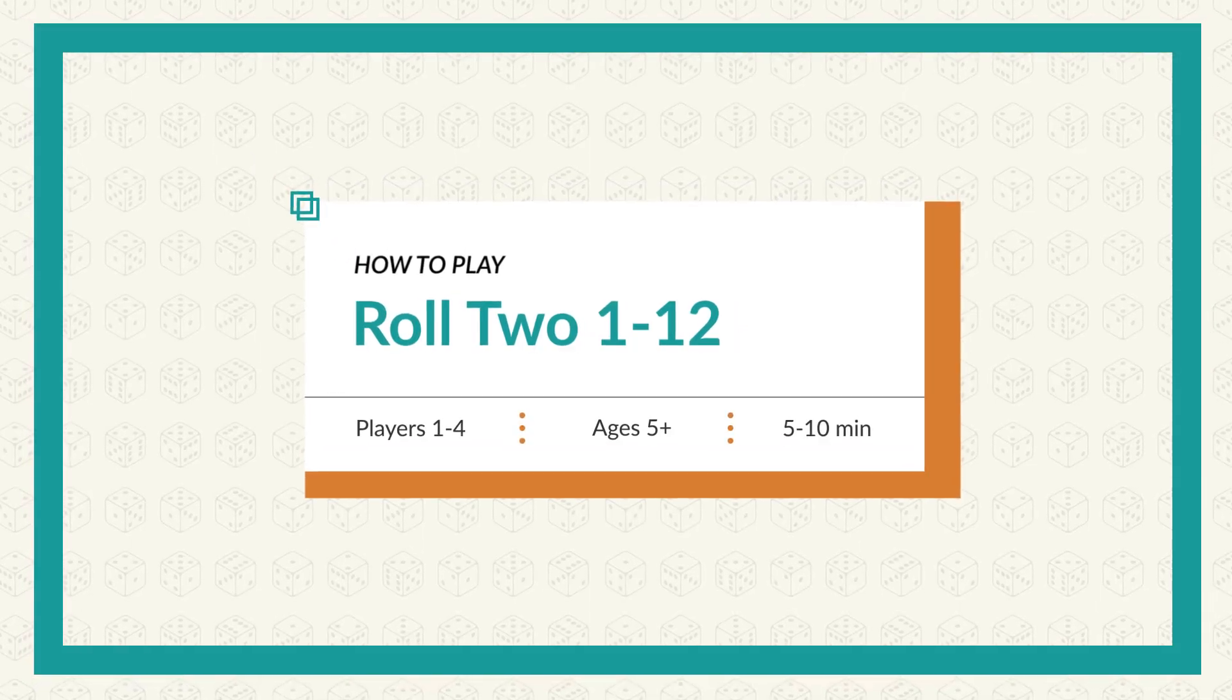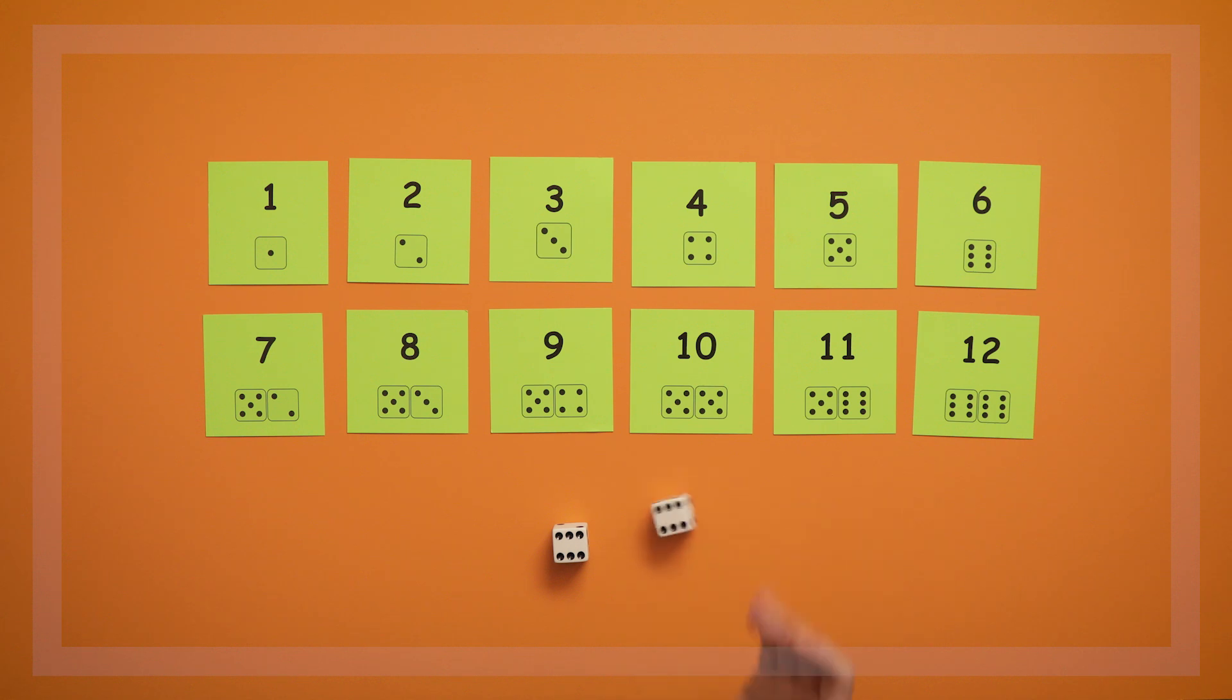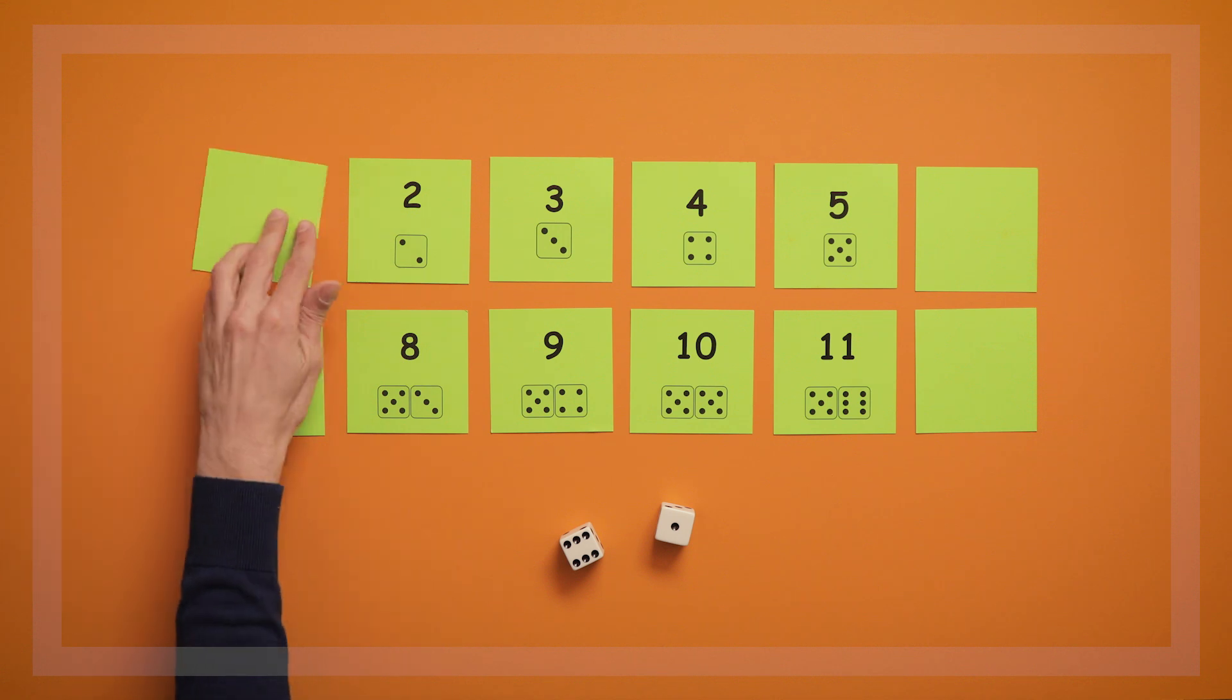This game is called Roll 2 1-12. This is the most advanced of the three roll games. The goal of this game is to match and combine the numbers rolled on the dice to turn over all the cards.